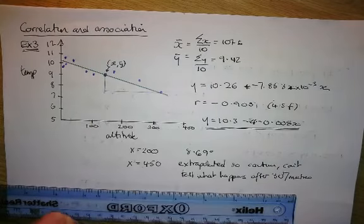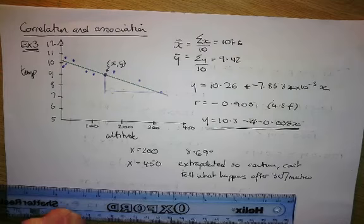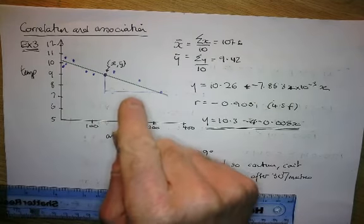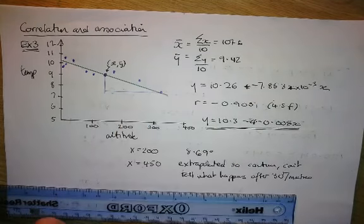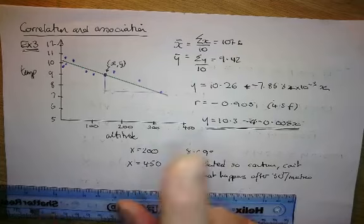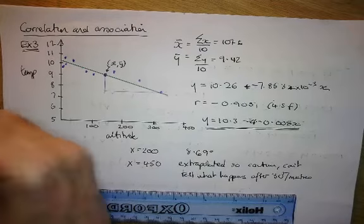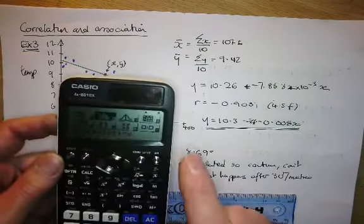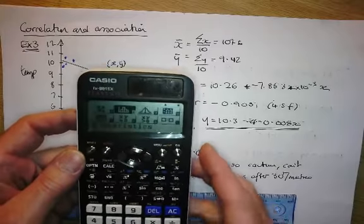It says calculate the mean values of x and y and put them on the diagram, and later calculate the correlation coefficient from a calculator. Because of that, I'm going to put all the data in at once, which will give me the mean value.